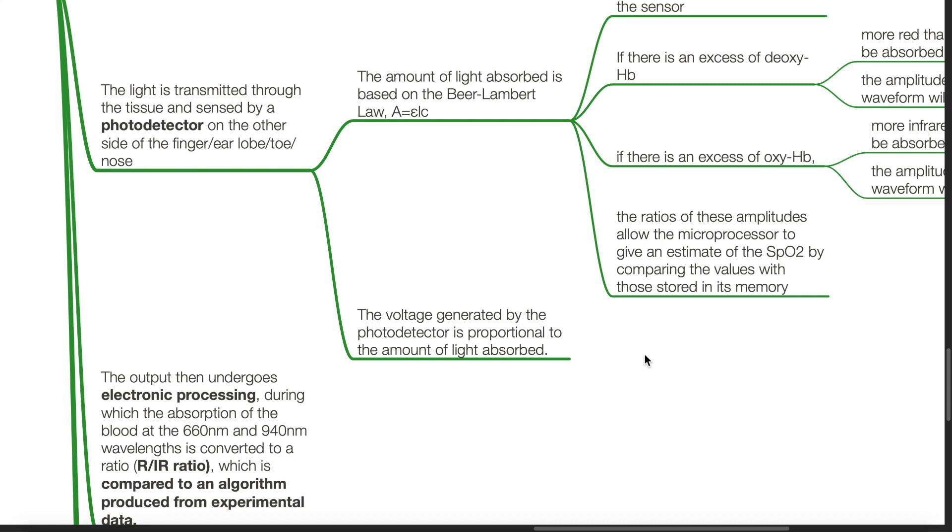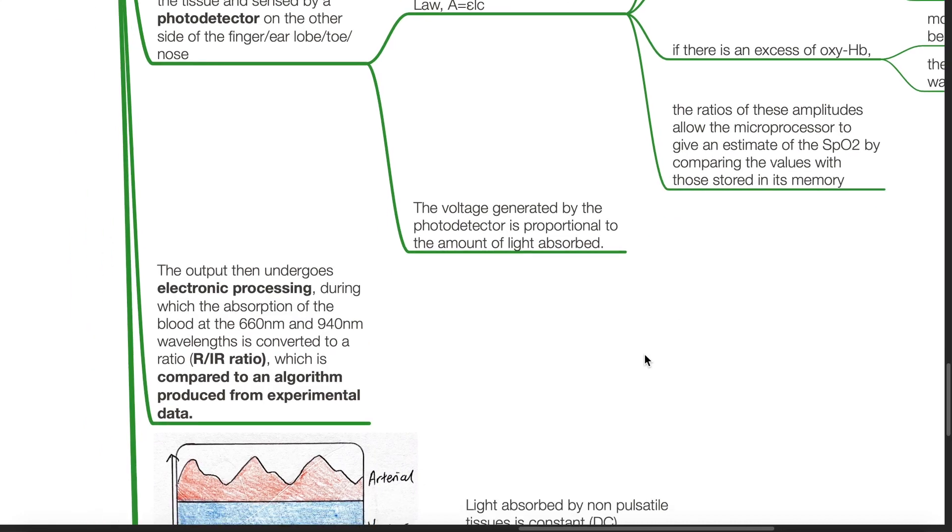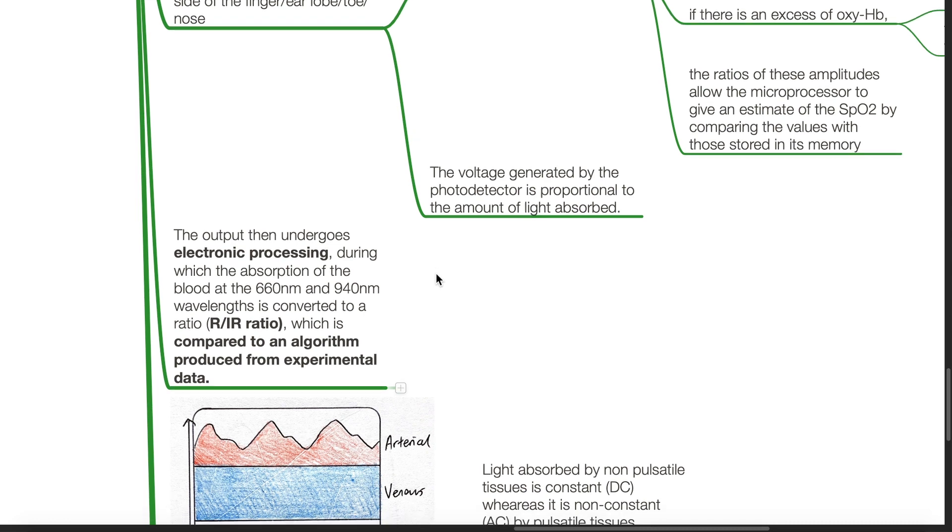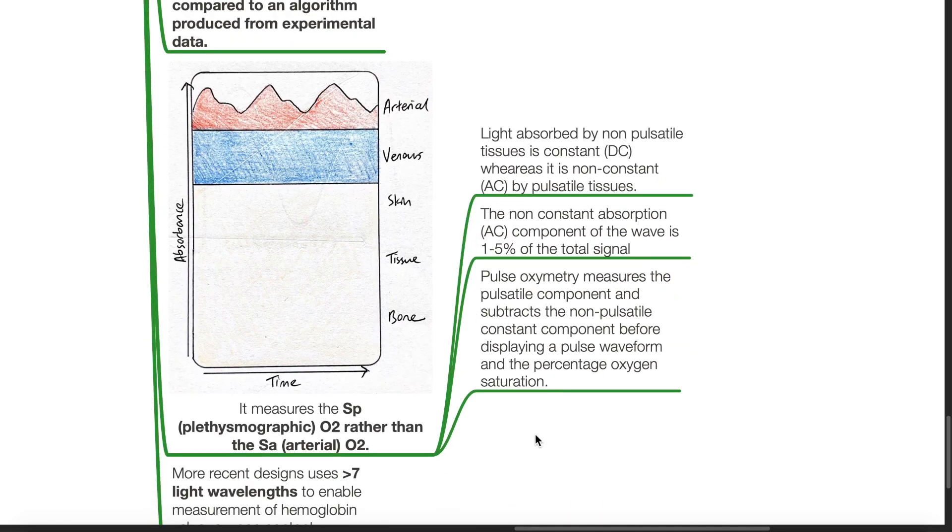The voltage generated by the photodetector is proportional to the amount of light absorbed. The output then undergoes electronic processing, during which the absorption of blood light at 660 nm and 940 nm wavelengths is converted to a ratio known as the R to IR ratio, which is compared to an algorithm produced from experimental data. It measures the plethysmographic oxygen saturation rather than the arterial oxygen saturation.